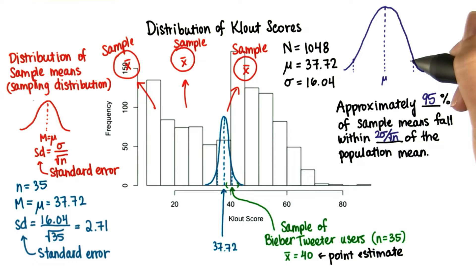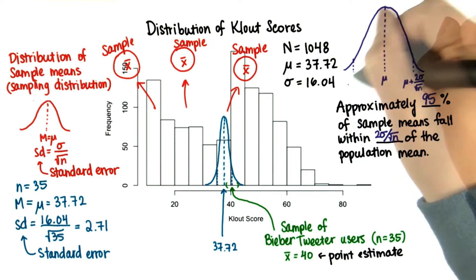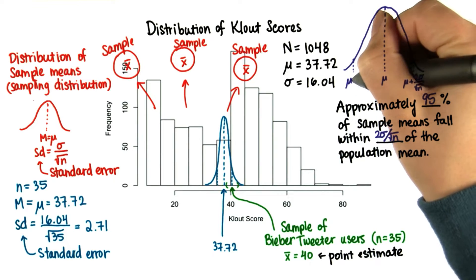And let's say this is 2 standard deviations away from the mean, which is the same as the mean plus 2 times the standard error. And this value here is the mean minus 2 times the standard error.